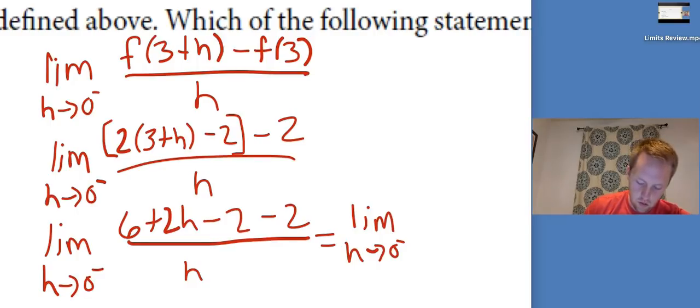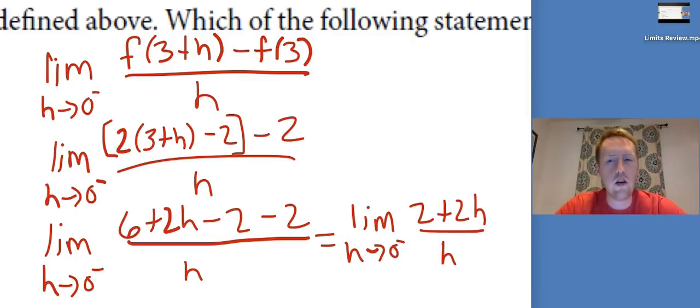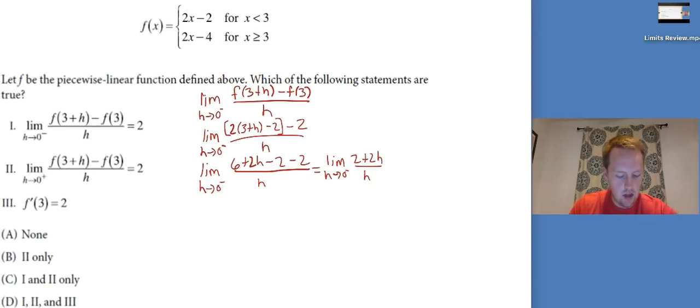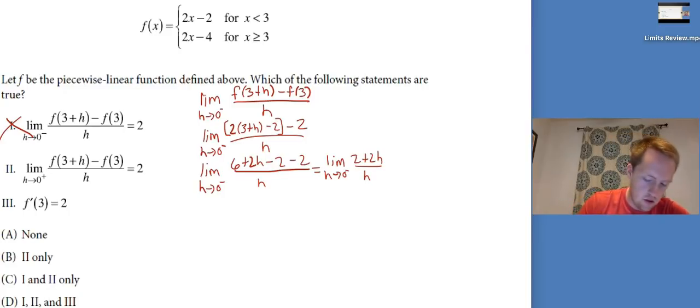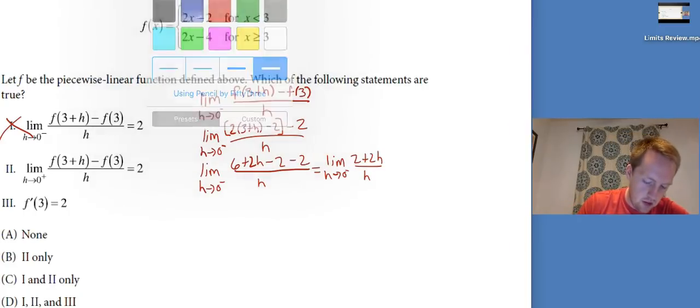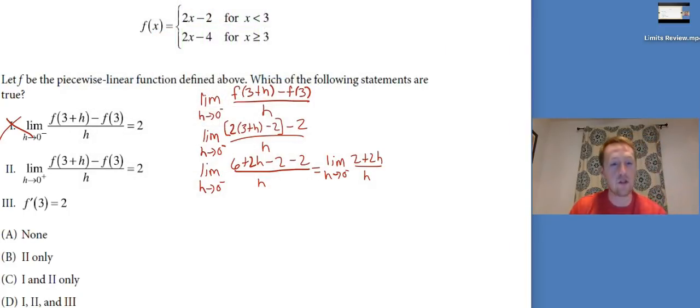That's the limit as H goes to 0 from the left for distribute the 2. I've got 6 plus 2H minus 2 minus 2 all divided by H. That's 2 plus 2H over H. Well, as H goes to 0, I get 2 over 0. Well, 2 over 0 would be some sort of infinity. So apparently, statement I is not true because the limit is not 2.